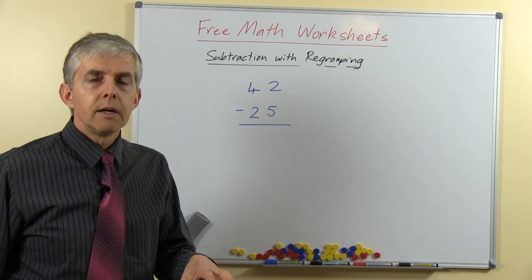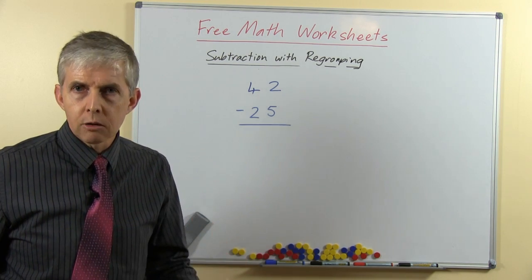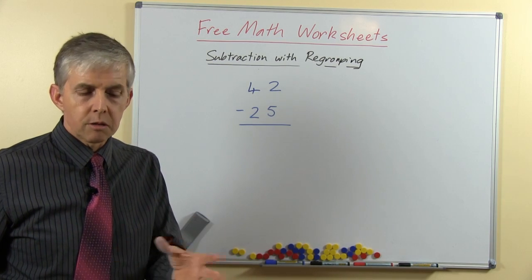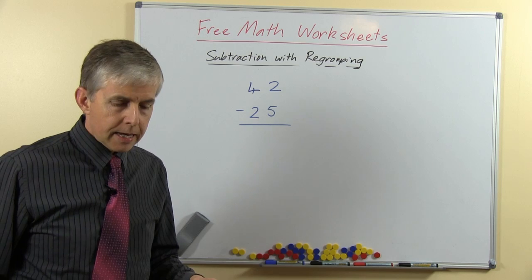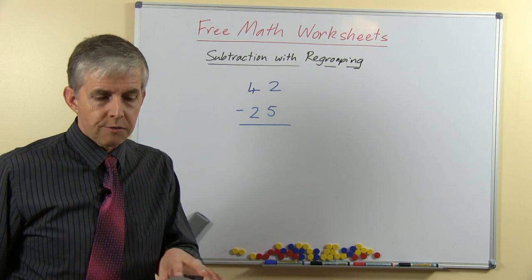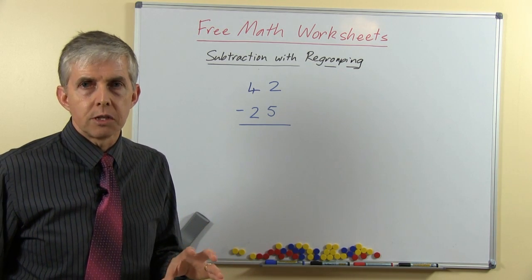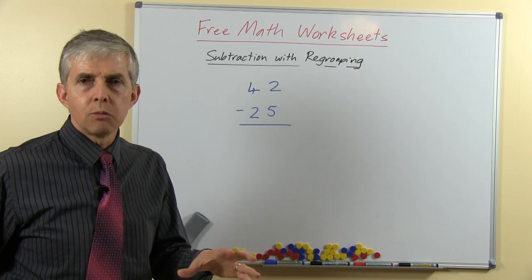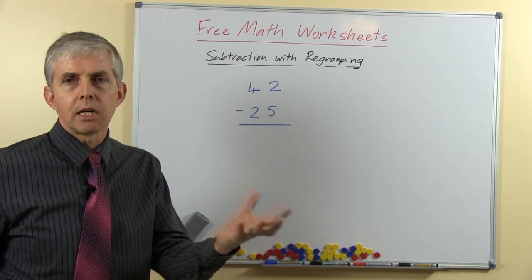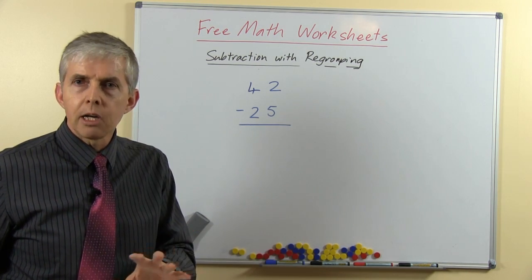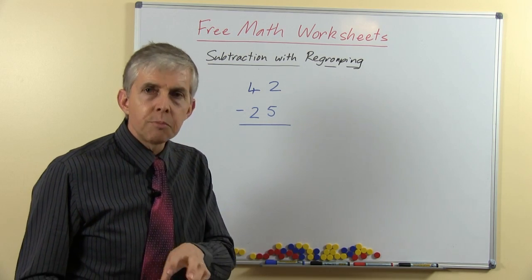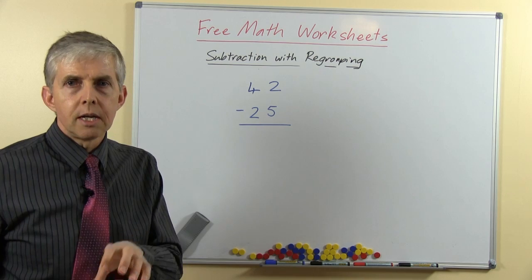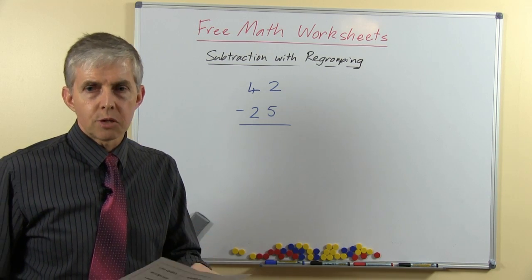This week we're looking at an operation or an algorithm, a computational algorithm. It's subtraction, two digit numbers with regrouping. So on each sheet you'll see the first half of the sheet is a series of those questions. The later ones have a lot more zeros in the ones place because taking away from zero is slightly more difficult with regrouping than the other numbers. And then at the bottom of the sheet there is some revision number fact questions for addition and subtraction.